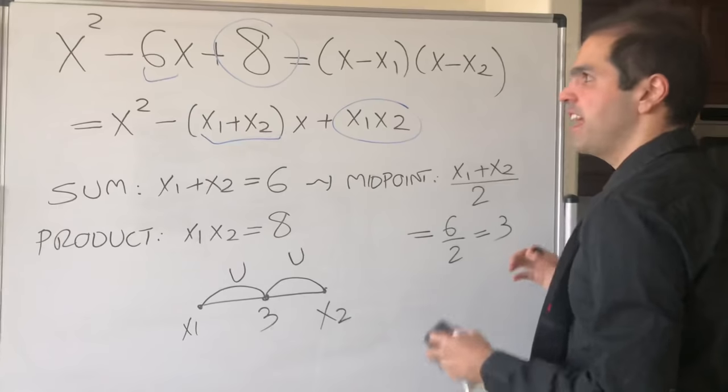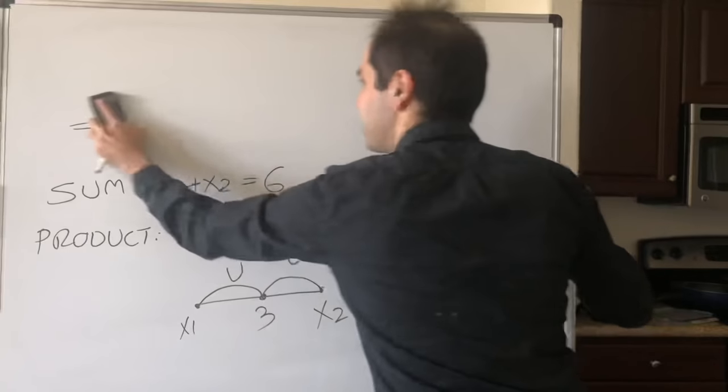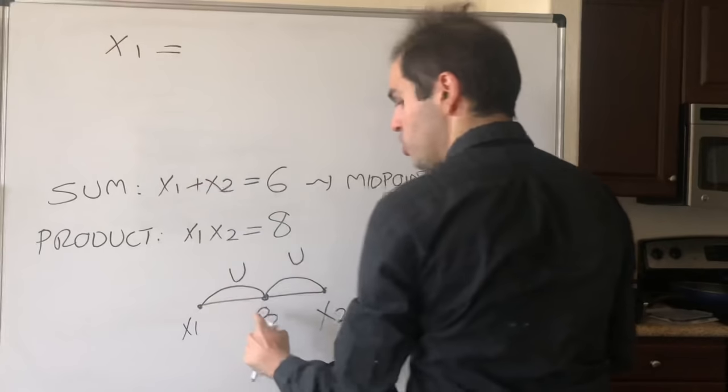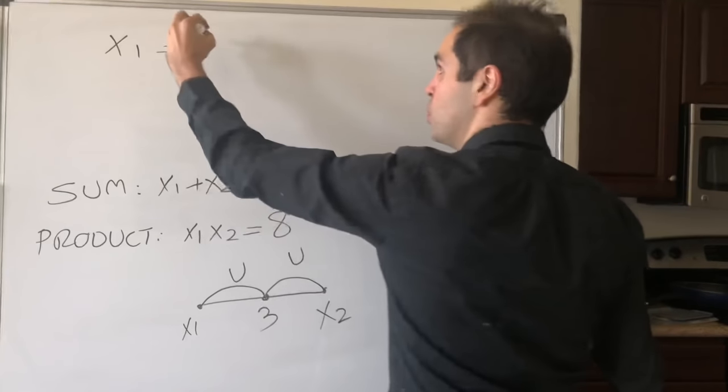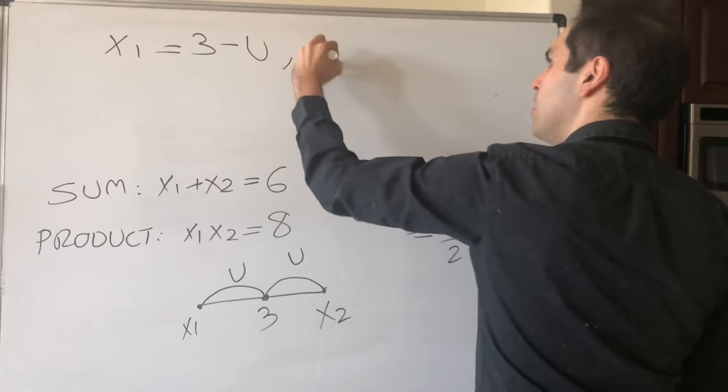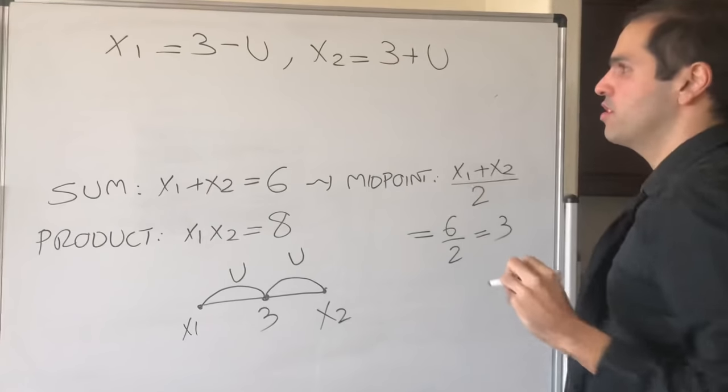In particular, what is this saying about the roots? Well, the smaller root, let's say x₁, is just 3 - u, so 3 minus the distance, and x₂, which is 3 plus the distance, is just 3 + u.